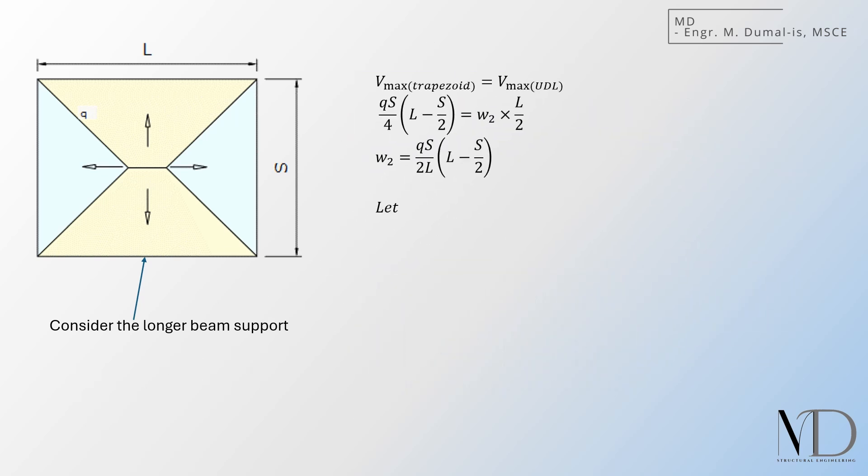Let us introduce a new variable, M, to represent the aspect ratio of the slab panel. Let M be the ratio of the shorter to longer span length of the slab, S over L. We already know of this quantity, as we usually use this to check if a slab can be treated as one-way or two-way in terms of its load distribution. We can then rewrite W2 by introducing M. And this, my friends, is the equivalent UDL for a trapezoidal load, assuming an equivalent maximum shear.